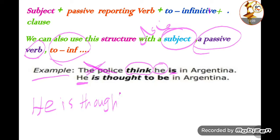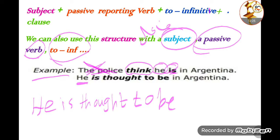'He is thought' — now I've finished with both the subject and the passive verb. Since the second verb needs to become an infinitive, and 'is' becomes 'be', the result is: 'He is thought to be in Argentina.'